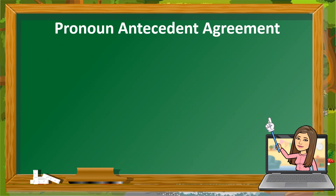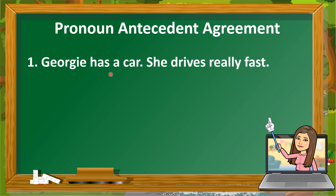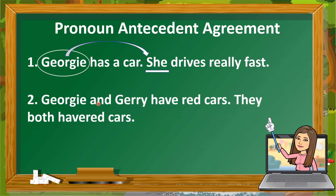Let us look at pronoun-antecedent agreement. Example one: 'Georgie has a car. She drives really fast.' The noun is Georgie — one person, so singular. Georgie is feminine, so we use 'she.' 'She' is the pronoun that agrees with the antecedent Georgie.